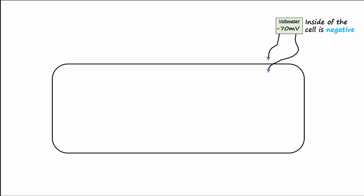If we position an oscilloscope or voltmeter with the recording electrode inside the cell and the reference electrode outside the cell, a potential difference of about minus 70 millivolts is recorded for the neuron. It is a negative number because the inside of the cell is negative compared to the outside. The inside being negative is an important characteristic that allows neurons to send electrical signals. Three main players are involved in making the inside of the cell negative. First, negatively charged proteins are made inside the cell and become trapped, making the inside more negative.